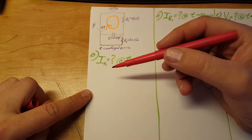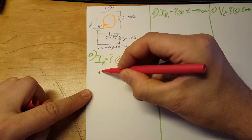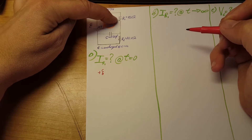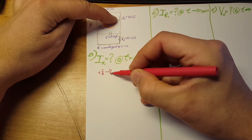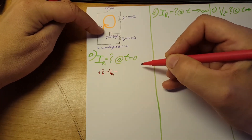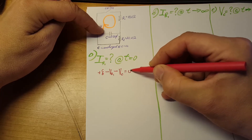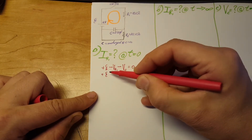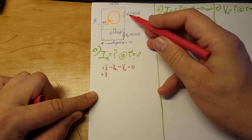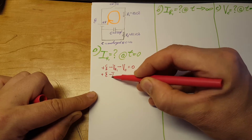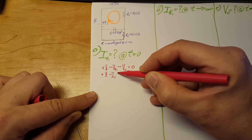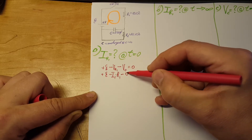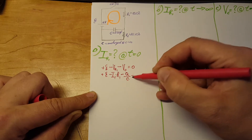We start at the battery, use resistor one and the capacitor. Looking at the voltages: starting at the battery gives us plus EMF, then minus the voltage drop on R1, minus the voltage drop over the capacitor, and this equals zero. We can write this as: EMF minus i₁·R1 minus q/C = 0.